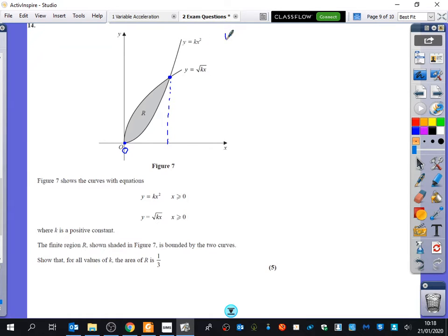And we find that out by solving the simultaneous equations. This curve is y equals kx squared, and this curve is y equals the square root of kx. So, to solve these simultaneously, I'm going to say that kx squared is equal to the square root of kx.